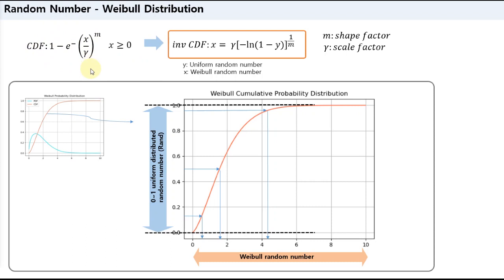The Weibull cumulative distribution function (CDF) can be easily expressed mathematically like this. Here m is the shape factor and lambda is the scale factor. If you find the inverse CDF function of this cumulative distribution function, then this time x will be the output of the inverse CDF function, and y is the input. That is, if we give a uniform random number y as input, the result x will be a random number based on Weibull probability distribution.